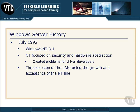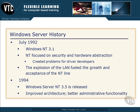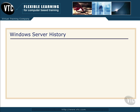The explosion of the local area network at this time fueled the growth and acceptance of the NT line. While it was a problem for driver developers, it appealed to administrators because there was increased security. Around about 1994, Windows released NT 3.5, another server product. It improved on the architecture, there was better administrative functionality and tools, and people continued to warm to Microsoft server offerings.